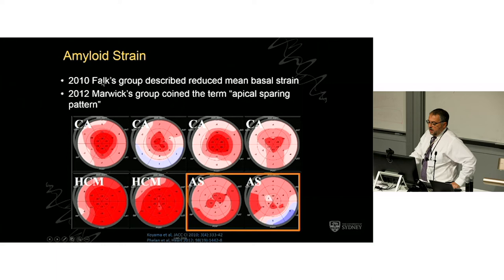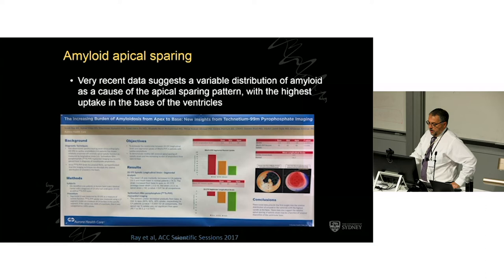Interestingly, Rodney Falk, who's the world expert from Boston, described this descriptively rather than numerically a couple of years before that. And in this poster, which I think was at ACC last year, it seems that the reason there's apical strain sparing is that there is actually more amyloid in the base of the heart.